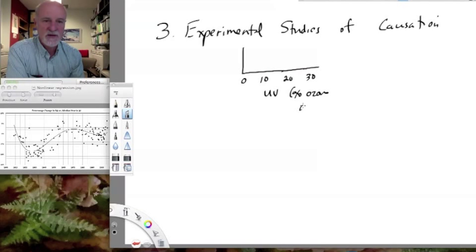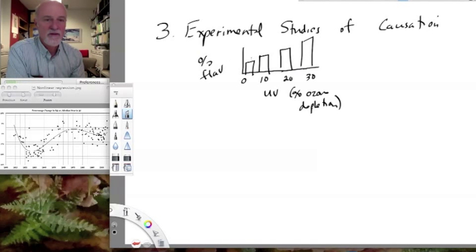You might say, why not just do an ANOVA? So we have some response of flavonoids or something as our y variable, and we're seeing whether it responds to ozone depletion. Why not just do that as an ANOVA?